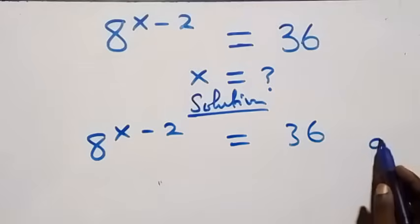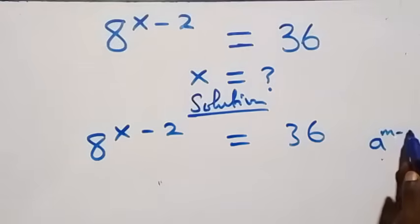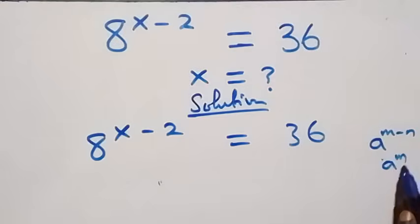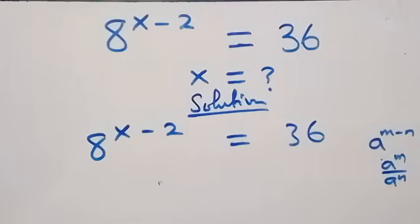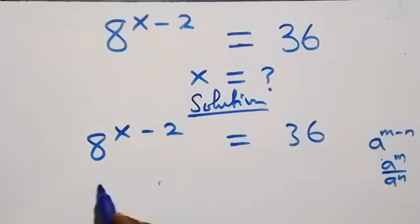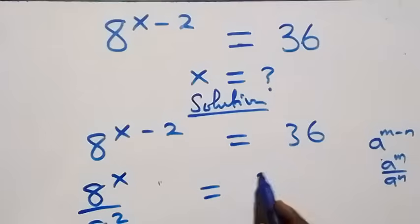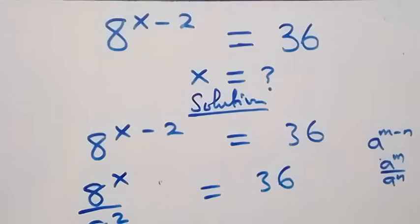This follows from when we have a raised to power m minus n, which is the same as a raised to power m over a raised to power n. So we can write this as 8 raised to power x over 8 squared, equals 36.